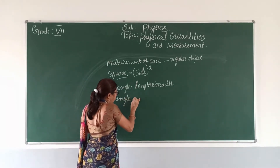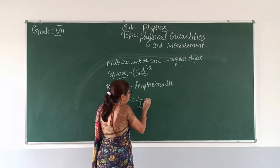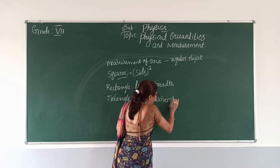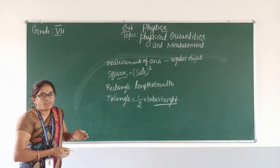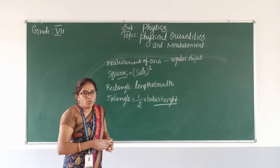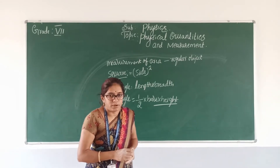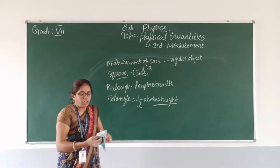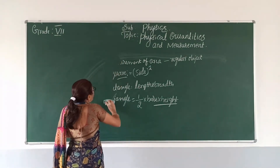If it is a triangle, how we can find out its area: the area of a triangle can be found out by using the formula half into base into height. Now, an example for an irregular object is a leaf. A leaf is an example for an irregular object, or irregular land.